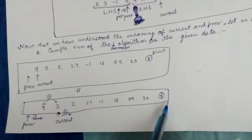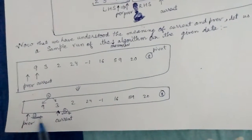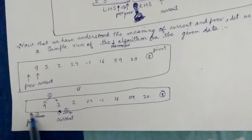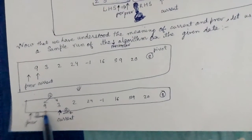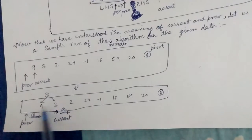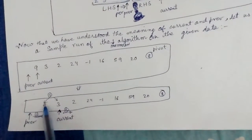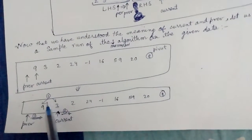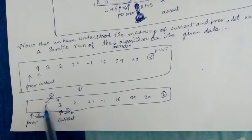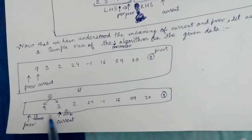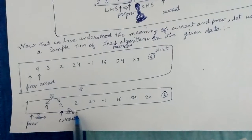Now 3 is less than 8, so we need to do the three steps. First we increment prev — now prev points to 9. Then we swap the elements pointed to by prev and current, so 9 comes here and 3 comes here. The third step is we move current by one step forward.